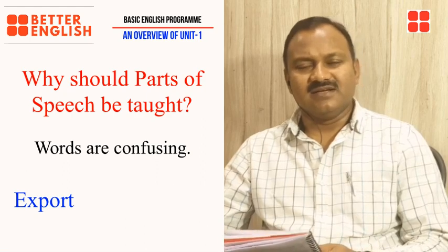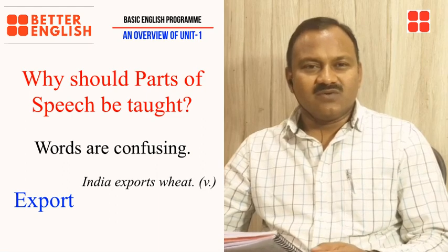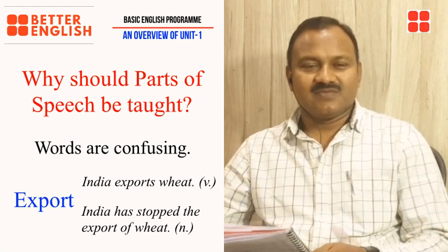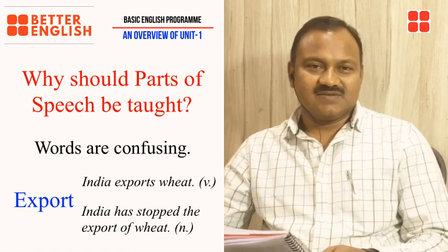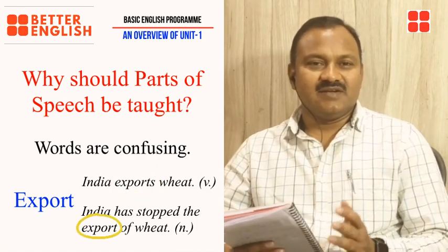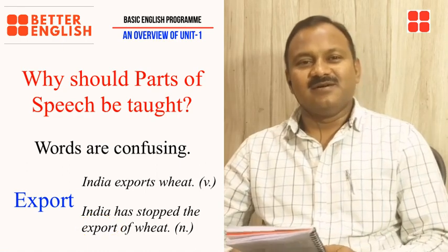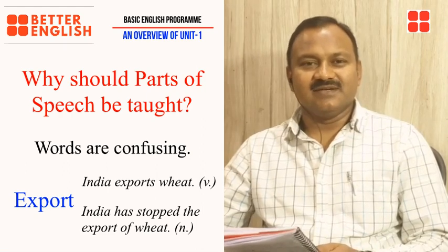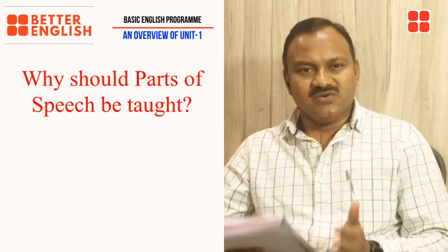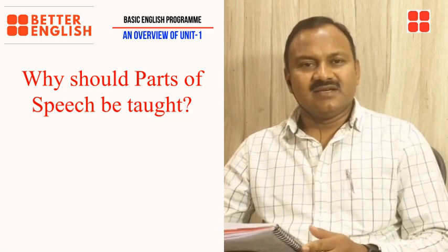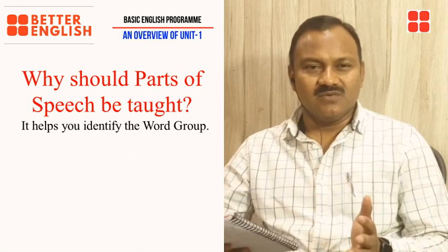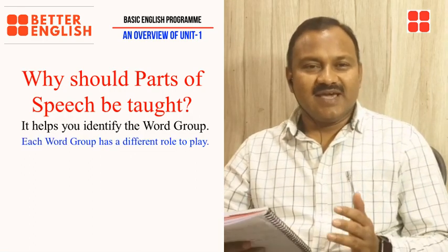Let me give you an example: 'India exports wheat' — here, 'exports' is used as a verb. 'India has stopped the exports of wheat' — here, 'exports' is used as a noun. You find the word 'export' in both sentences, but it plays different roles. To understand this, we need to study parts of speech. That is also why we have covered parts of speech in Unit 1 — because parts of speech gives you the idea of which word belongs to which word group.